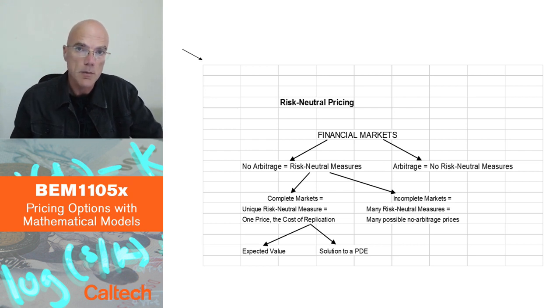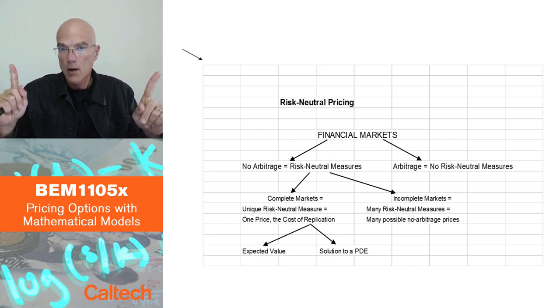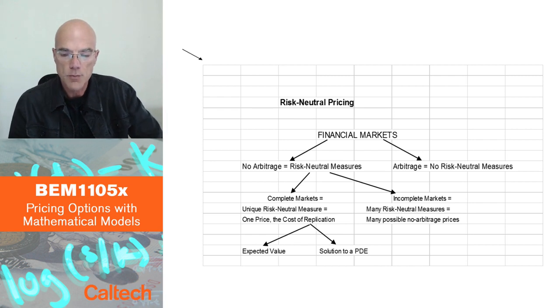In incomplete markets, there are many risk-neutral measures, many possible no-arbitrage prices. There's going to be a range, an interval of no-arbitrage prices, which you can think of as a bid price and an ask price, and everything in between can be a no-arbitrage price.